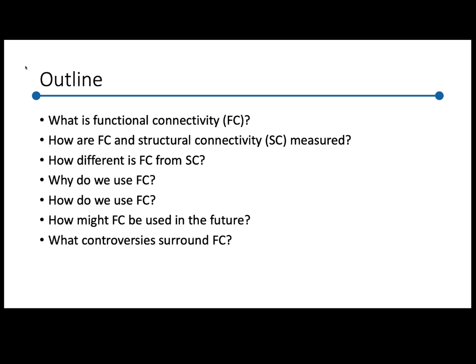Here's a brief outline of what we're going to talk about. We'll talk about what functional connectivity is, how it's related to structural connectivity and how the two are measured, why we use functional connectivity — or FC — how we use it, how it might be used in the future, and finally we'll start to talk about some controversies. I'm going to go through the controversies pretty quickly. The idea is mostly to throw at you all the things you need to think about when using functional connectivity data, so you can go back to the slides and the cited papers when needed.